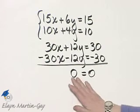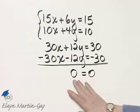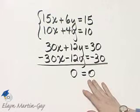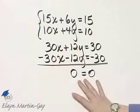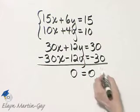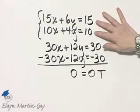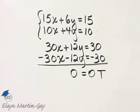Now remember, if all variable terms subtract out and you end up with a false statement, the system has no solution. If all variable terms subtract out and you end up with a true statement, that means that these two lines, if graphed, are actually the same line.